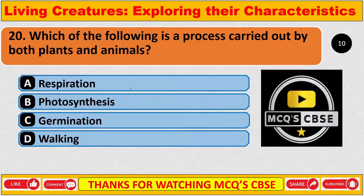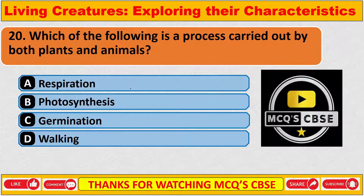Which of the following is a process carried out by both plants and animals? The correct answer is A — respiration.